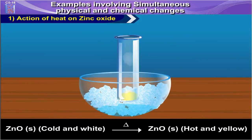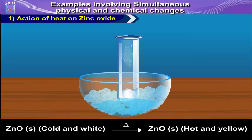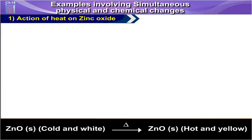Solid ZnO, which is white when cold, upon heating gives ZnO solid, which upon heating turns yellow.